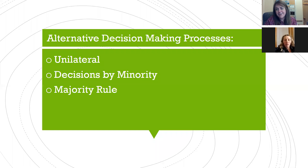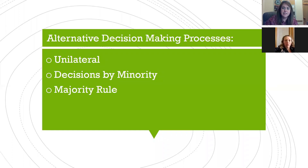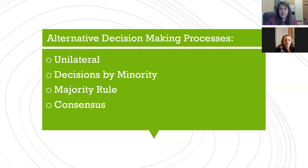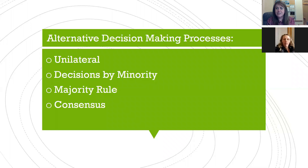We can do decisions by majority rule, but nothing says that has to be done by following Robert's Rules. We can just ask how does everybody feel — thumbs up if you agree, thumbs down if you disagree — and you can see if there's a majority. The most positive way we can make decisions in 4-H is consensus: do we all agree? And for the most part in our 4-H club meetings, consensus is going to work out pretty well.